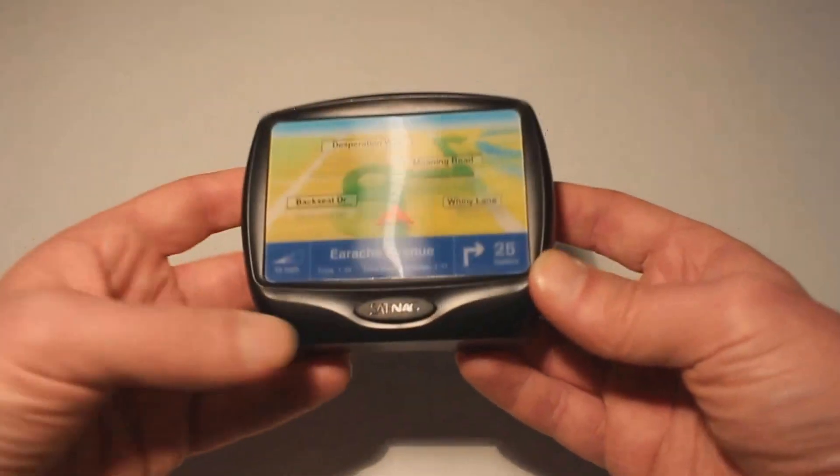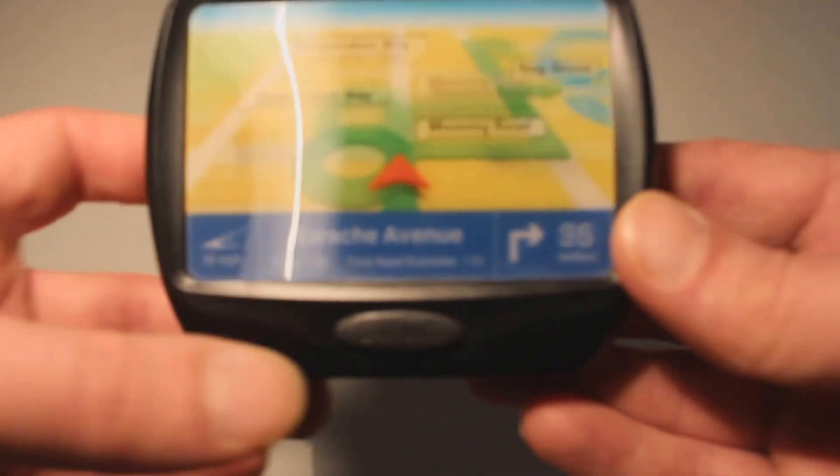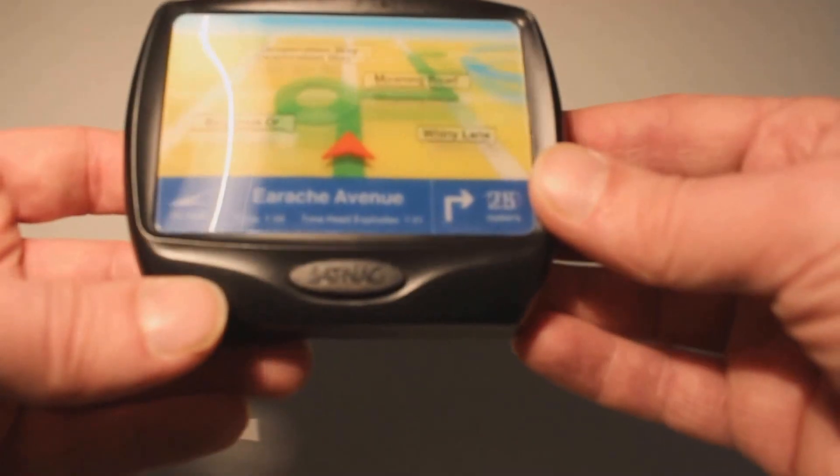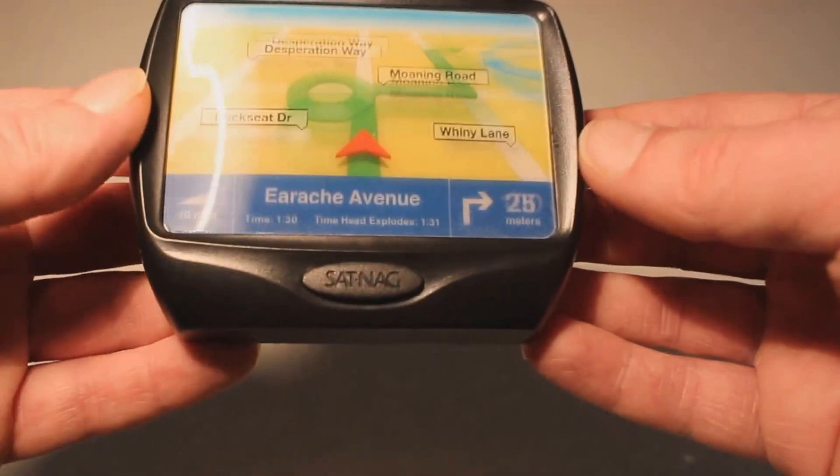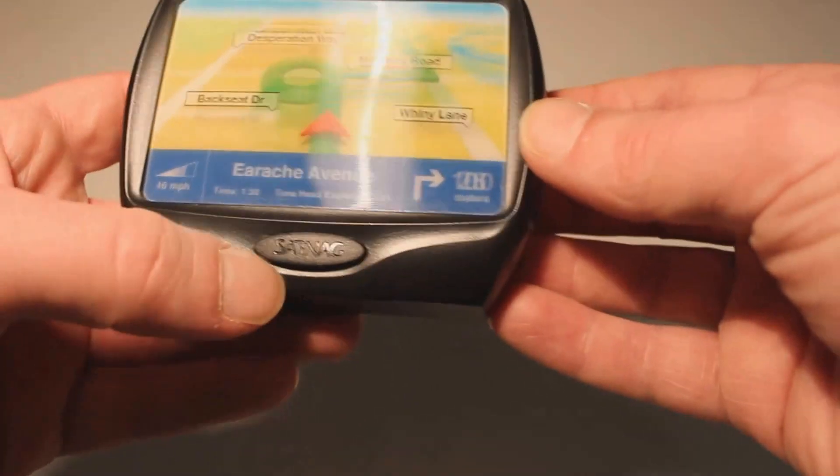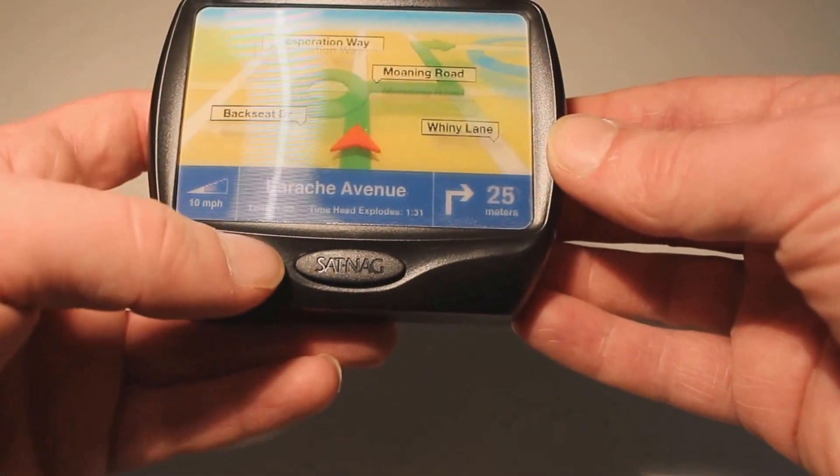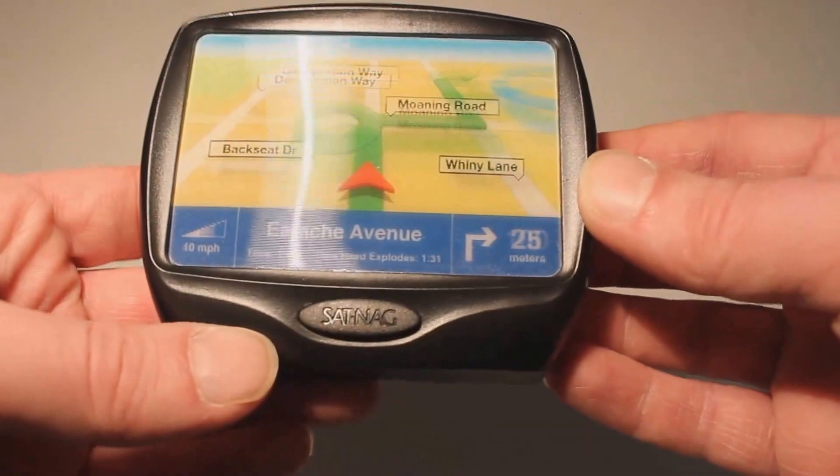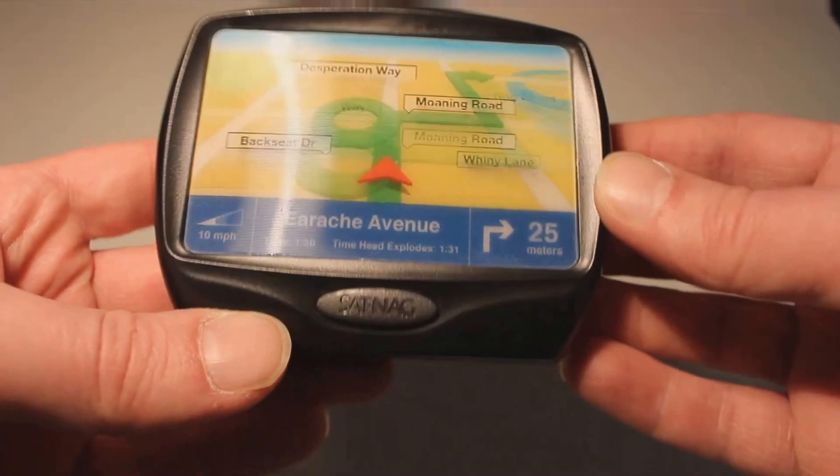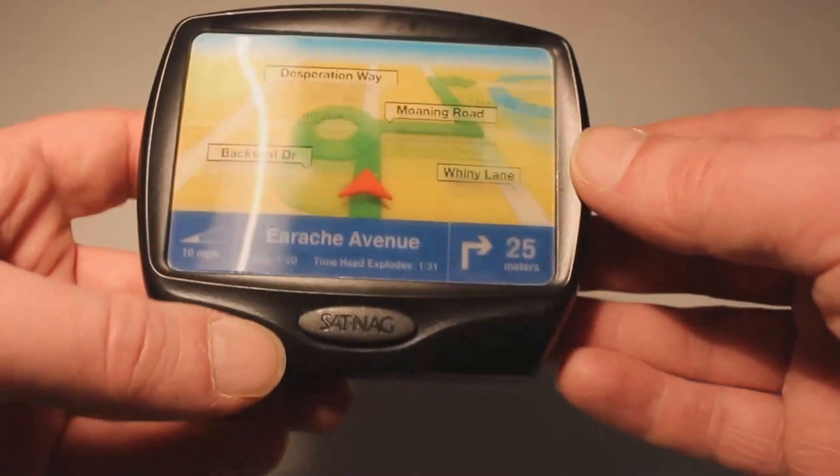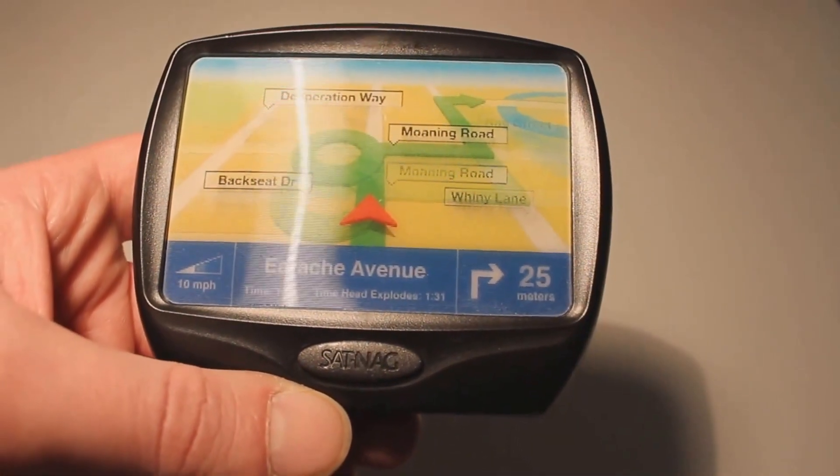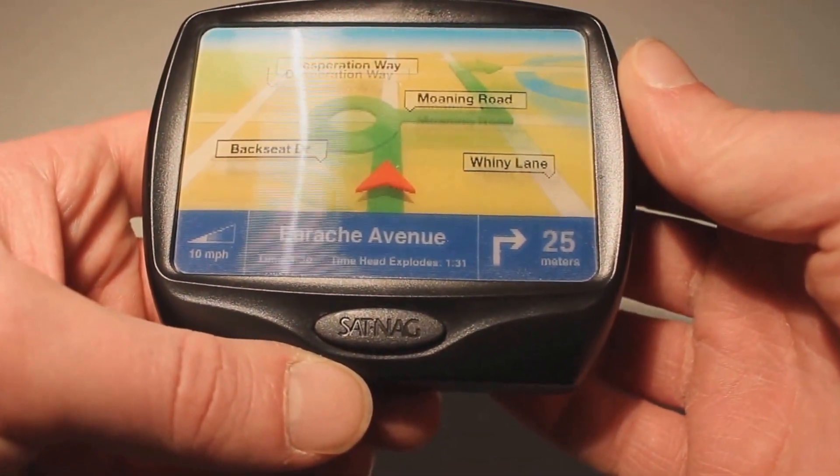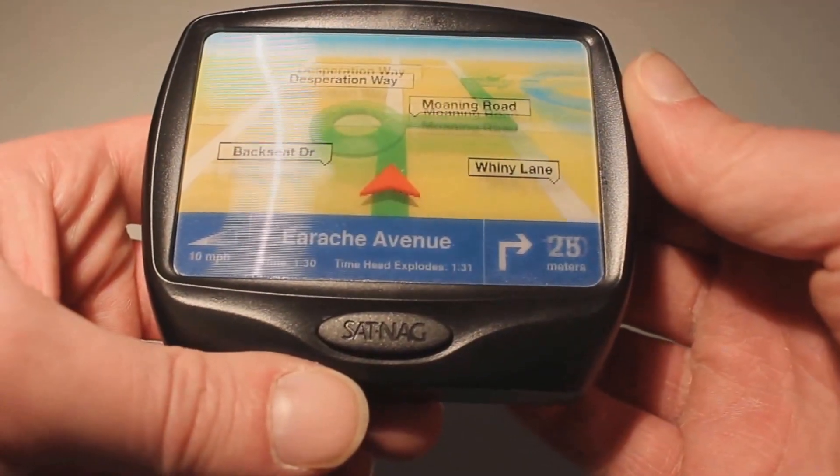This isn't actually a sat navigation device at all, it's called a sat nag, so called because it's just a hologram that changes. Its desperation way, moaning road, whiny lane, backseat driver - all those little descriptions that perfectly tell how you feel about using this sort of device. As you can see we're currently on Earache Avenue. We are using a hologram here which means it's going to change all the time. At the next turning I'm going to grab the sides of my seat violently and make a face from a horror film when a car in the side road lurches forward an inch.